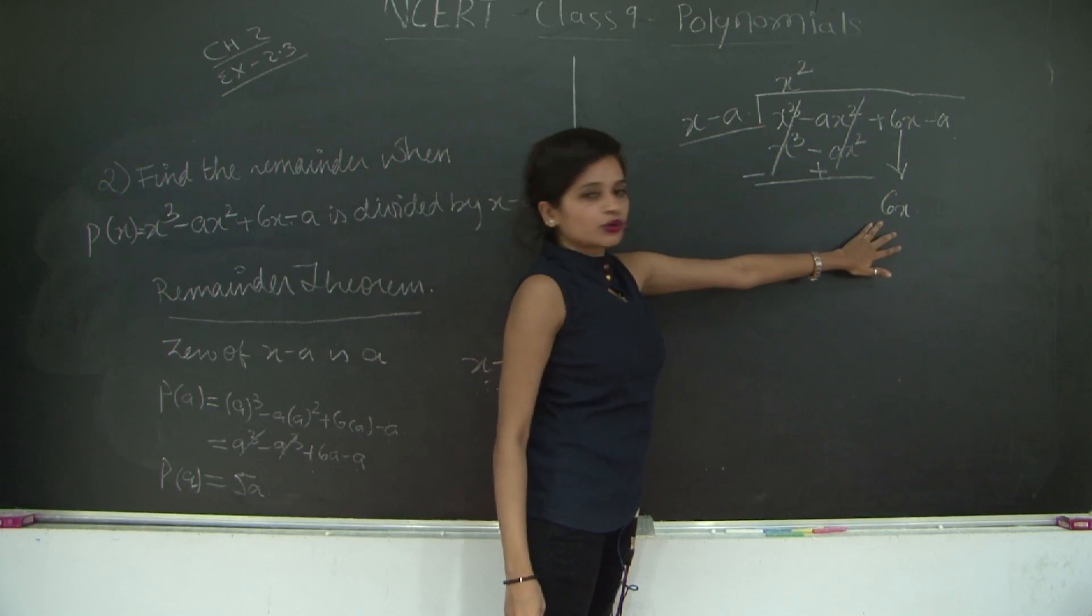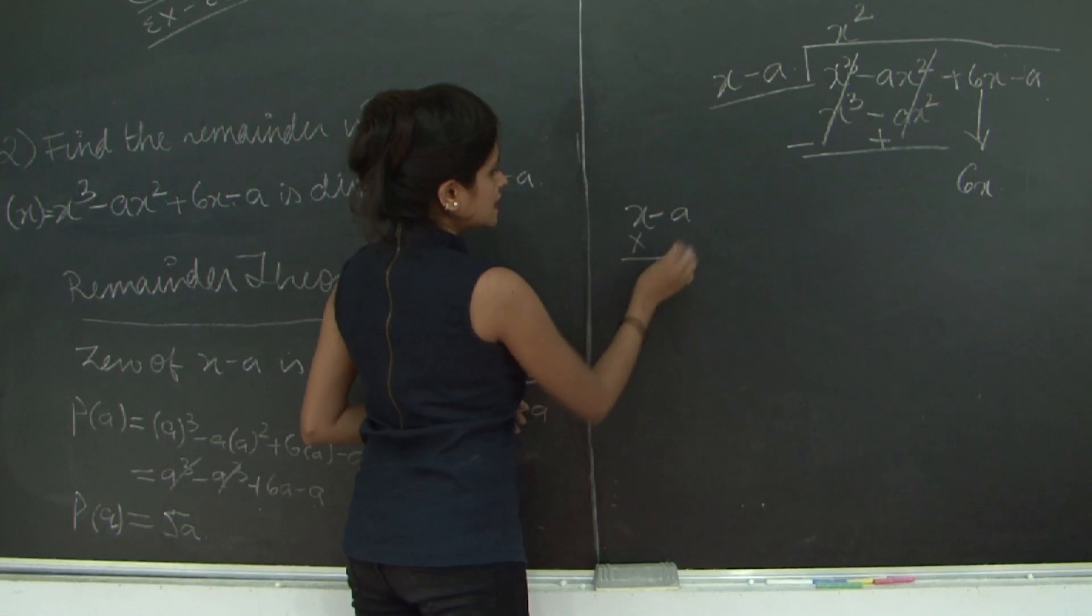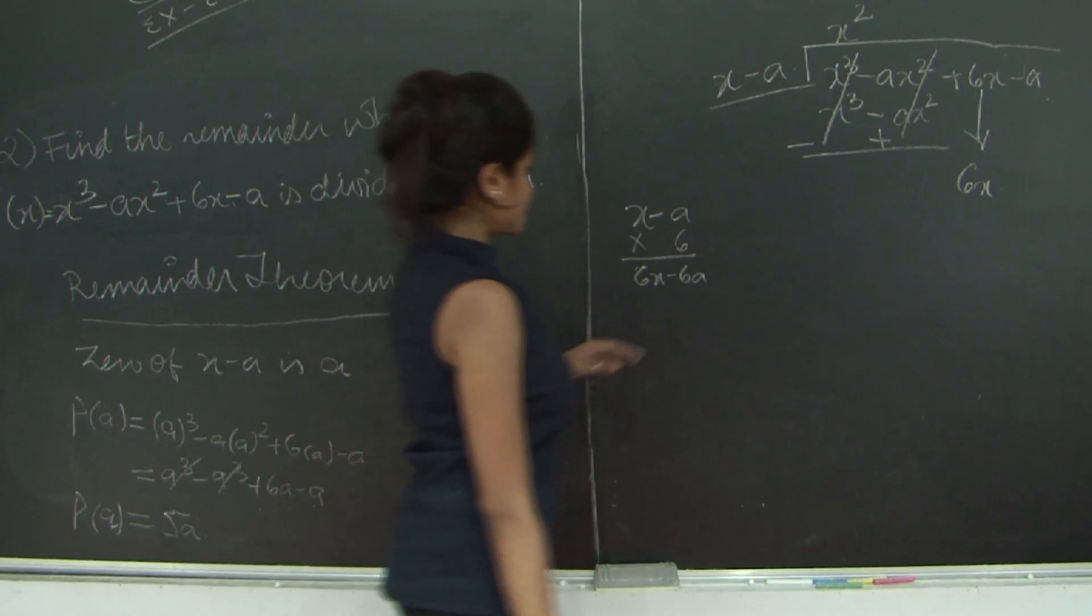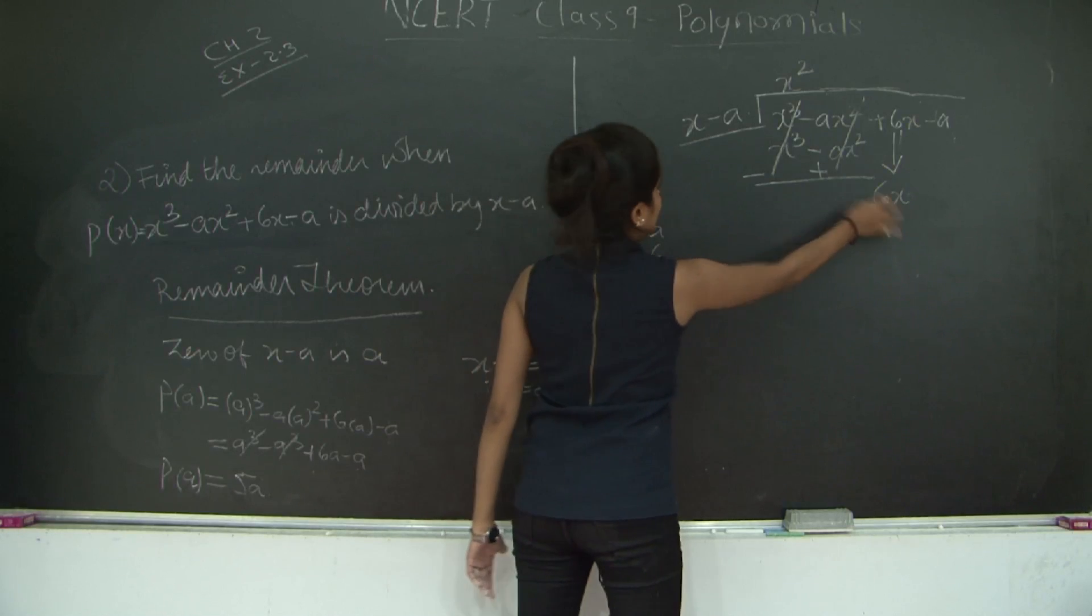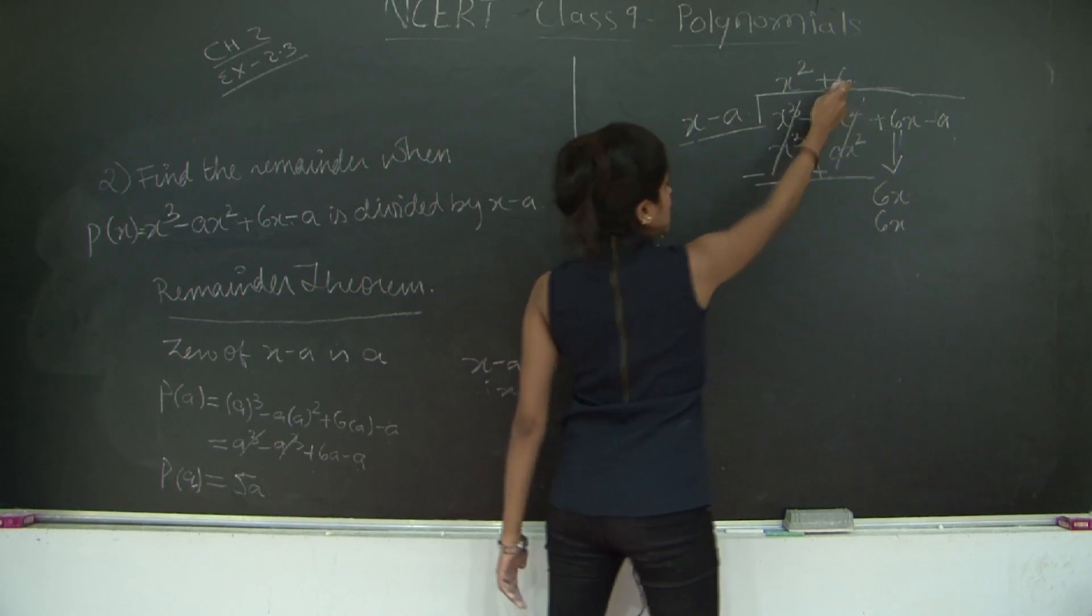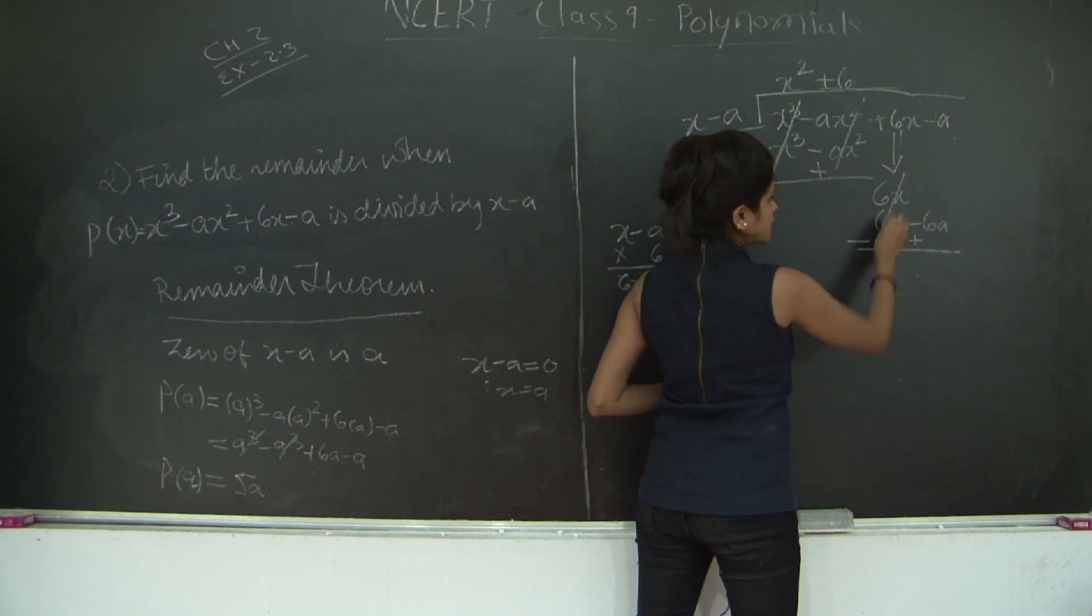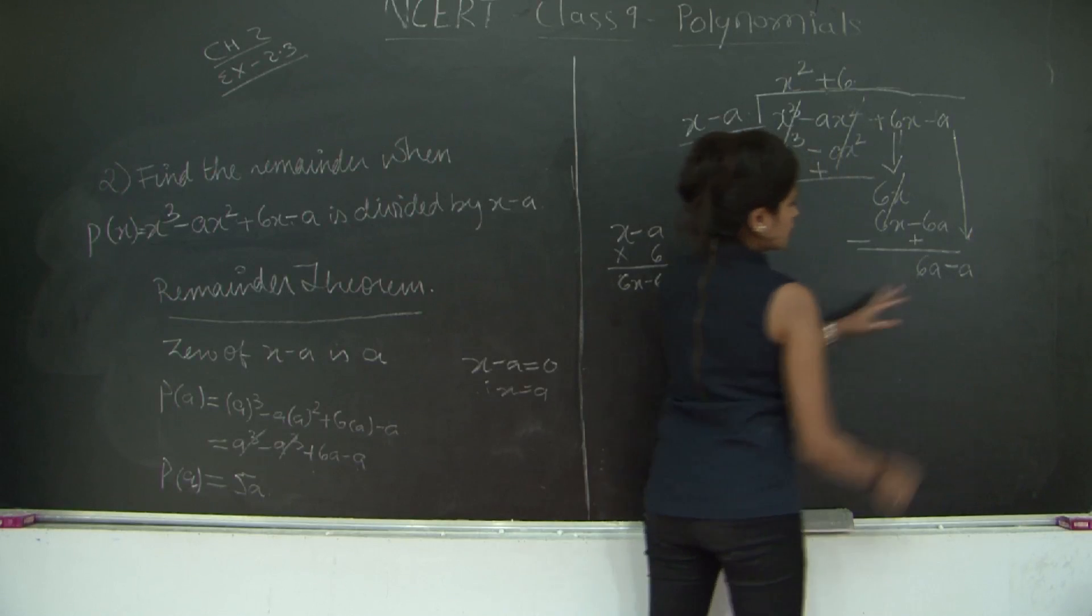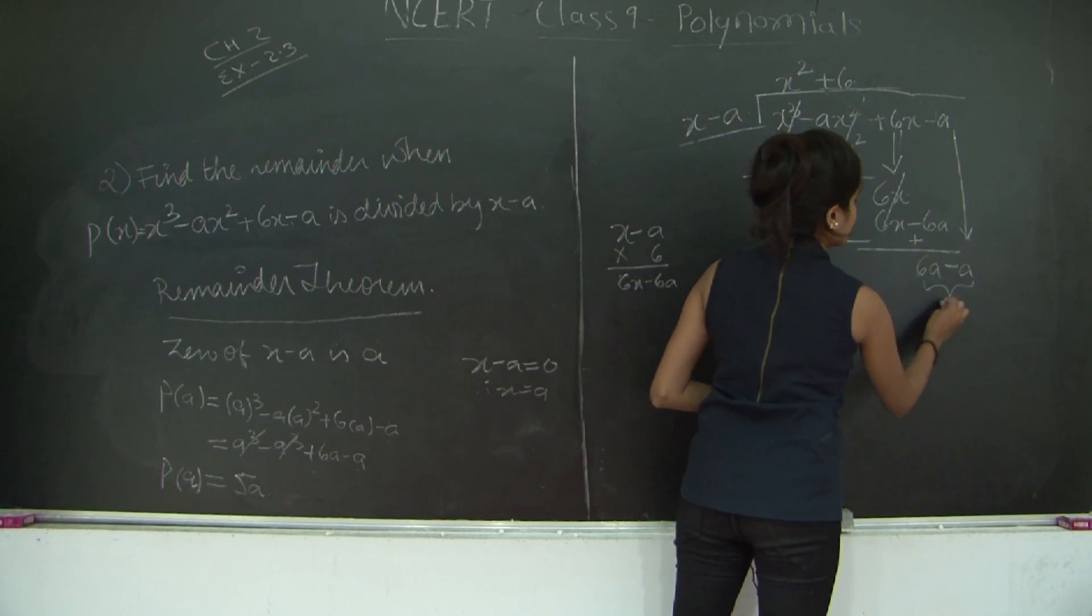So x minus a into what is going to give me 6x? So plus 6 will give me 6x. Now 6 into x give me 6x. 6 into minus a will give me minus 6a. Sign changes. This becomes positive. I am left with 6a. Now I get down this term which is minus a. Let us simplify this first because they have the same variables. So 6a minus a is nothing but 5a.